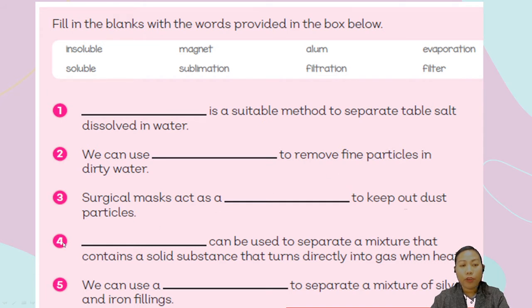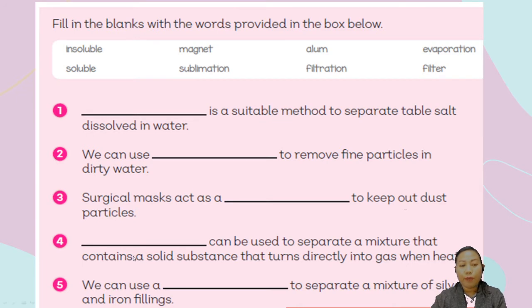Number four: blank can be used to separate a mixture that contains a solid substance that turns directly into gas when heated. And number five: we can use a blank to separate a mixture of silver and iron filings. What method are you going to use?